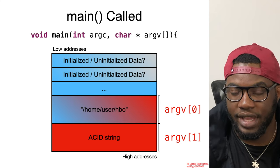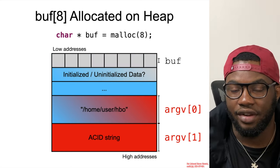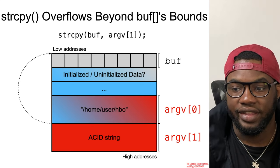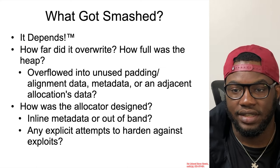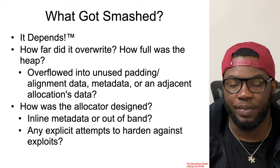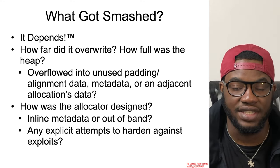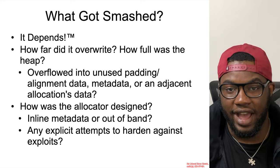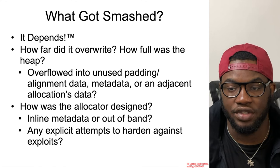After the call to main, the heap memory could contain previous or uninitialized data. Eventually the allocation for the buffer occurs and we have eight bytes set aside for buff. At the time of strcpy, the argument passed to the program will be written into the buffer. What gets smashed depends on how far the overflow goes and how full the heap was — it could overflow into unused padding, alignment data, metadata, or adjacent allocation data. Most of these depend on how the allocator was designed, as some allocators have metadata inline with allocations and some do not. Any hardening attempts against exploits could also affect what happens after a heap buffer overflow.